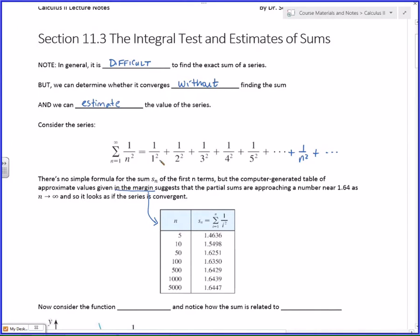I said in the margin, but actually what I'm referring to is this table right here. This suggests that the partial sums look like they're approaching something in the vicinity of 1.64. Because what I did was I took the first five terms, like this right here, that's S sub 5.